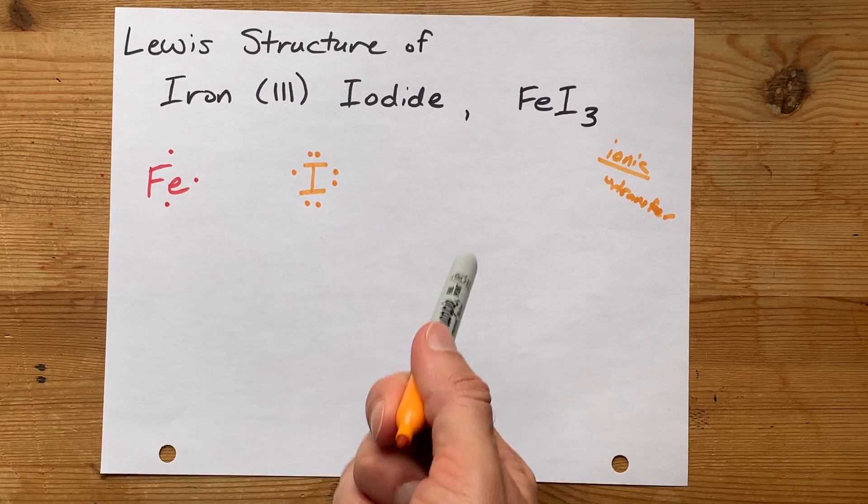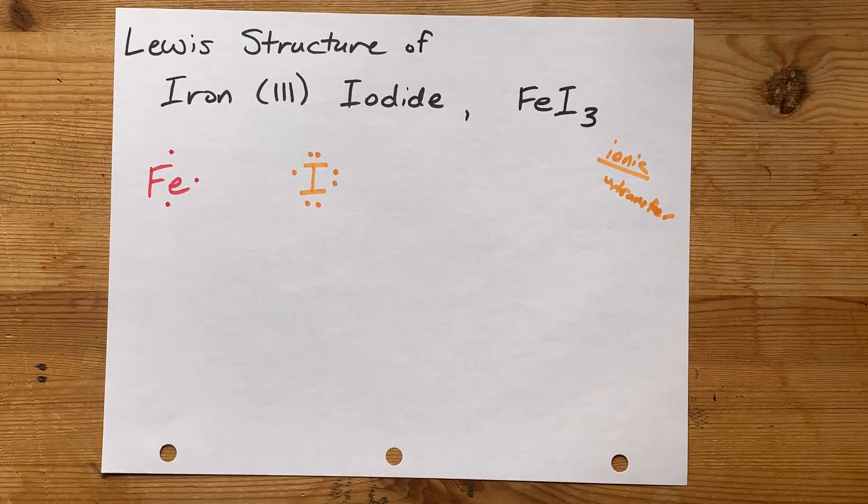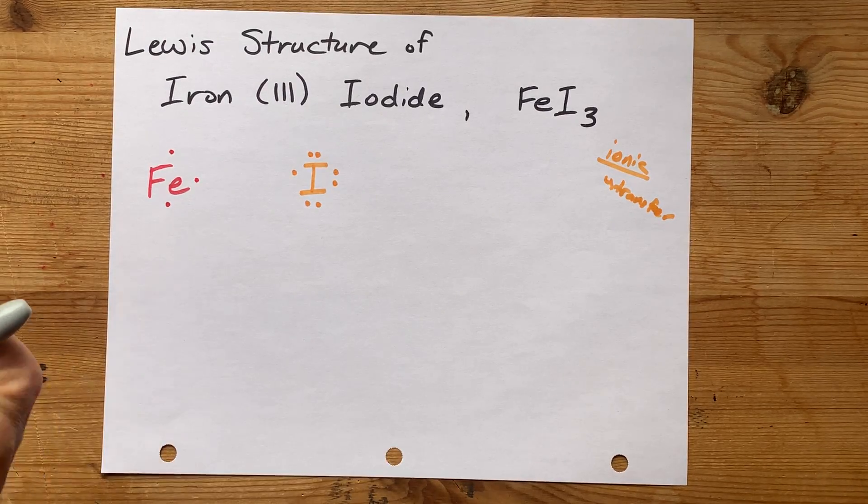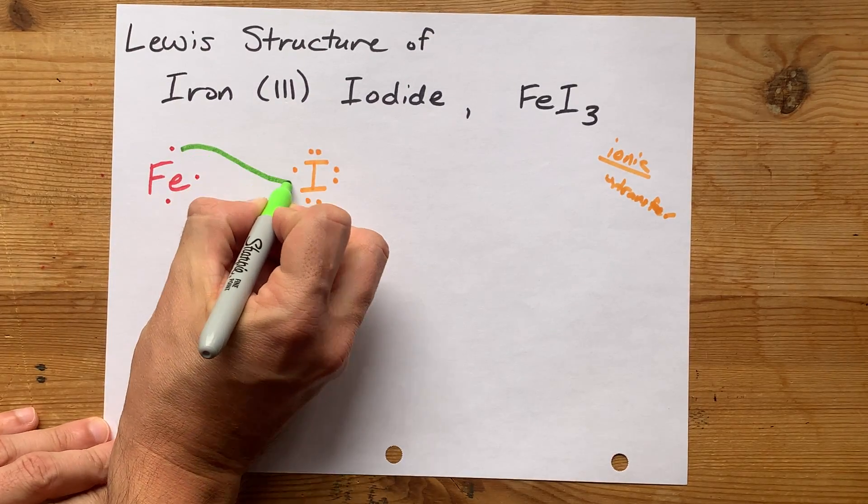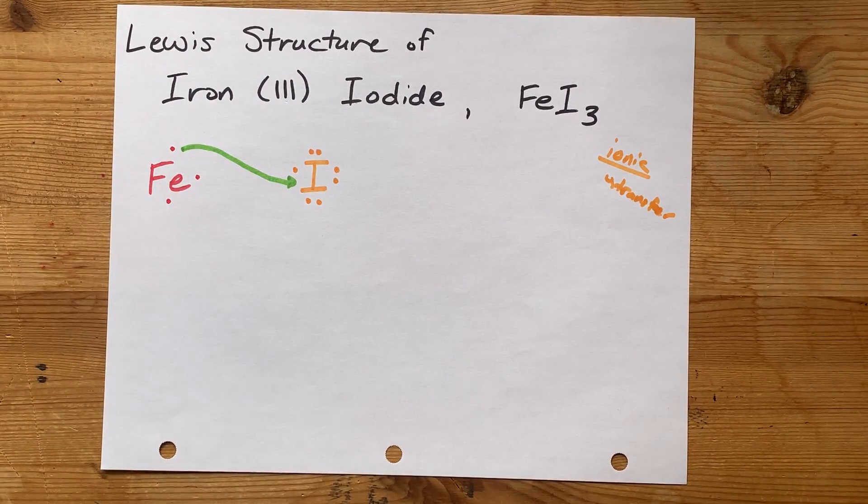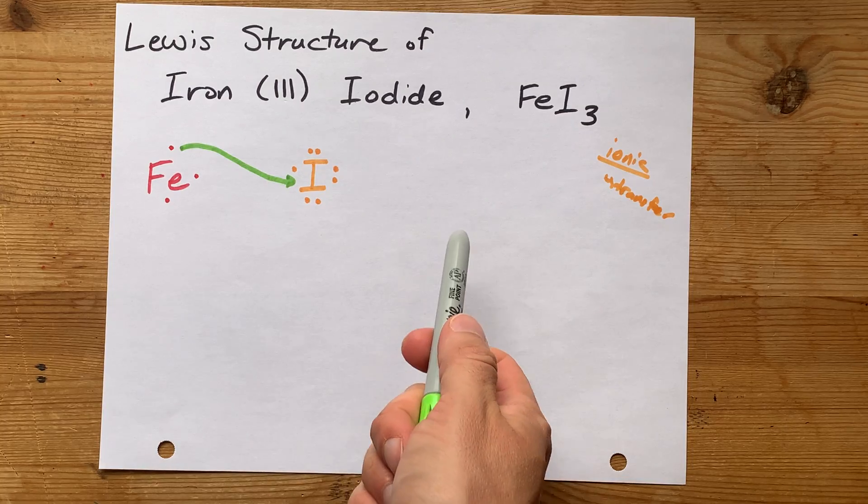This iodine is only short by 1 electron. So I'm going to draw an arrow from the iron, giving away 1 electron to 1 of the iodines. Now, that iodine will have 8 electrons.